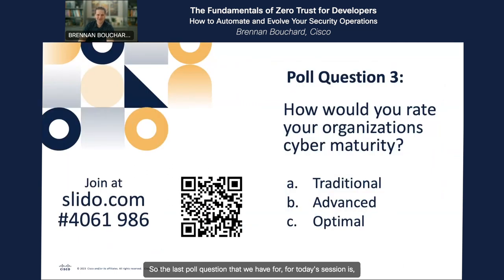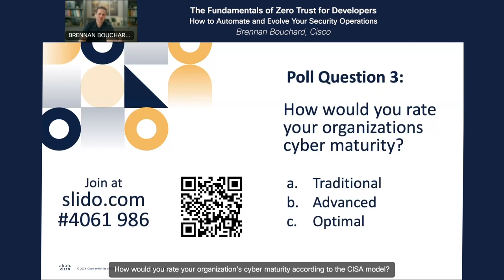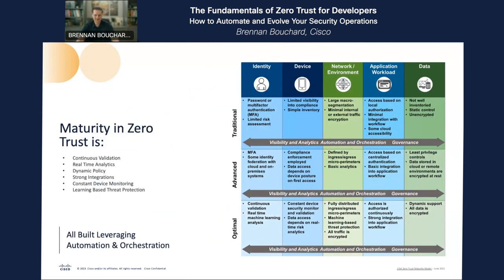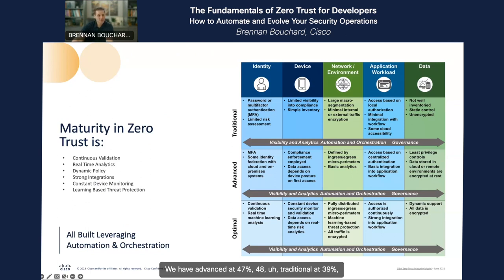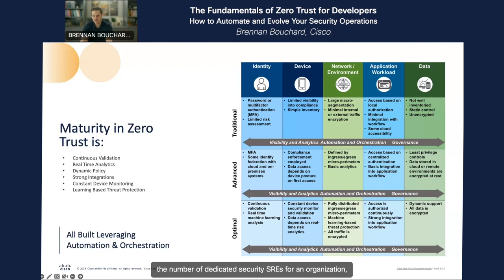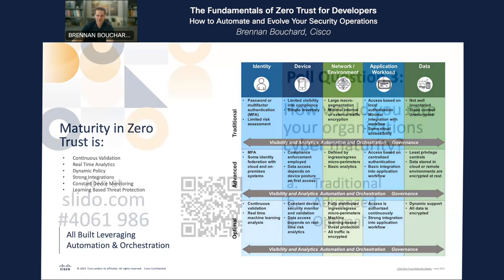The last poll question for today's session is: at a high level, how would you rate your organization's cyber maturity according to the CISA model? Advanced is at 47-48%, traditional at 39%, and optimal at 14%. It's really interesting, especially given the distribution we saw of dedicated security SREs — seeing that breakdown as far as maturity goes.